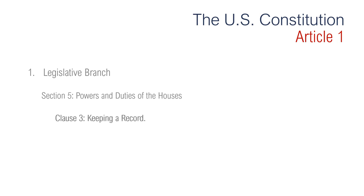Section 5, Clause 3 is regarding keeping a record. It says that Congress needs to keep a journal of its proceedings and publish it. The journals of the two chambers are published at the end of each session of Congress. Oftentimes during hearings and on the House or Senate floor, you will hear members state that they want to get something on the record — not necessarily to make a law, but to get it in the official record.